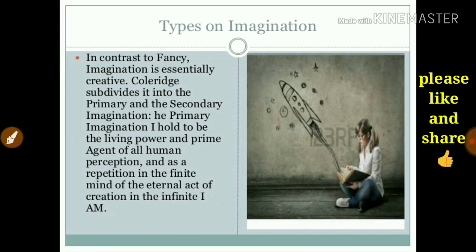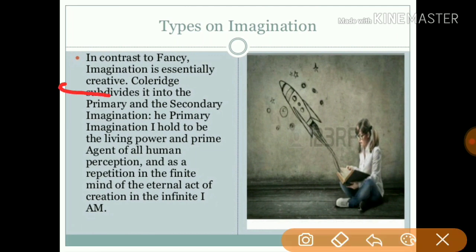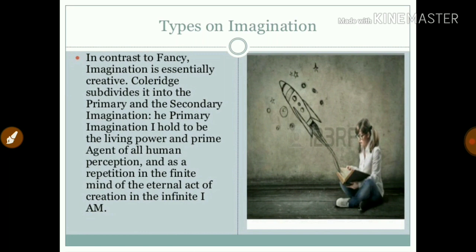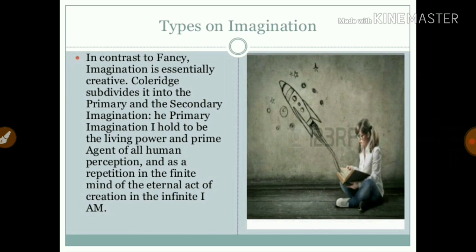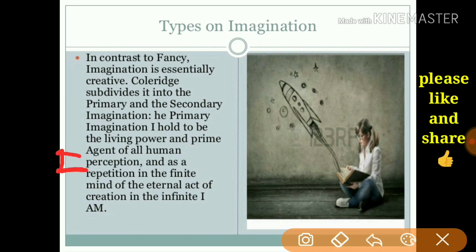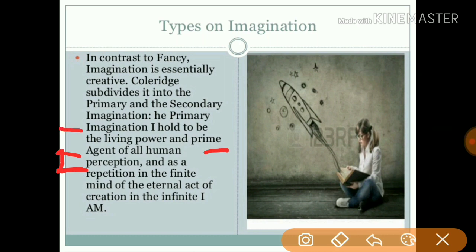Regarding the types of imagination, Coleridge subdivided imagination into primary and secondary. Primary imagination he holds to be the living power and prime agent of all human perception. When our perception occurs, primary imagination guides it. It is a repetition in the finite mind of the eternal act of creation in the infinite I AM.